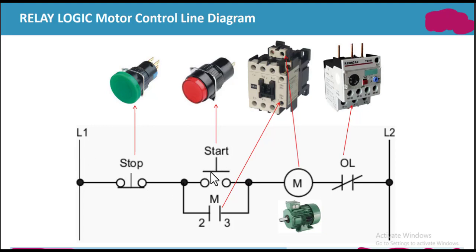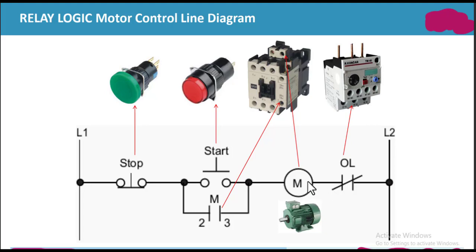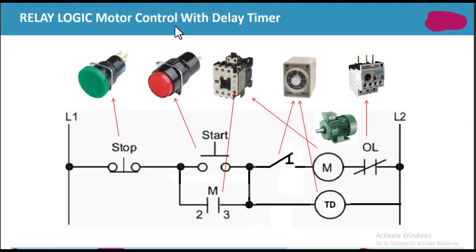We use this stop switch and this start switch for the operation of the motor. The motor will perform its function until it reaches its prescribed range of current and voltage. When the current flows over the prescribed value, this overload protective contactor will turn off the whole process to protect the motor from burning.